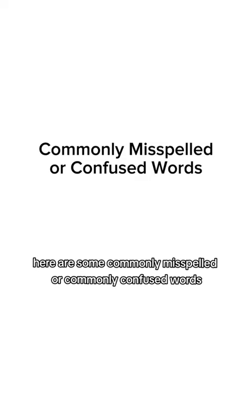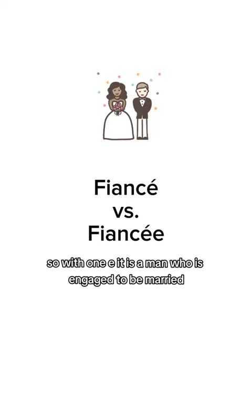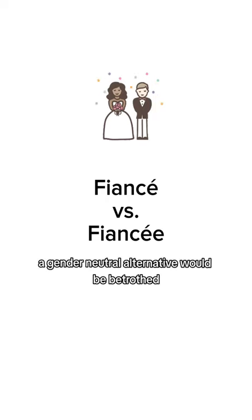Here are some commonly misspelled or commonly confused words. The word fiancé is French and it's actually gendered. With one E it is a man who is engaged to be married, and with two Es it is a woman who's engaged to be married. A gender neutral alternative would be betrothed.